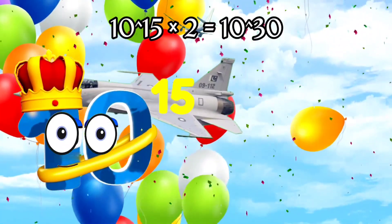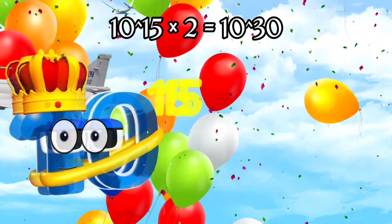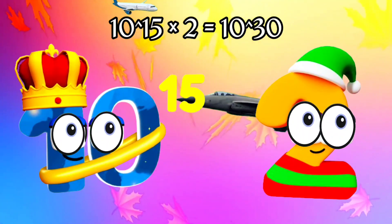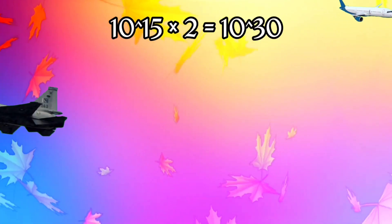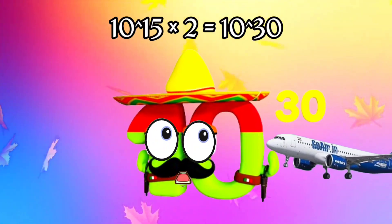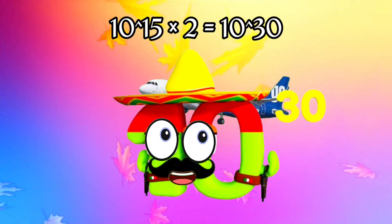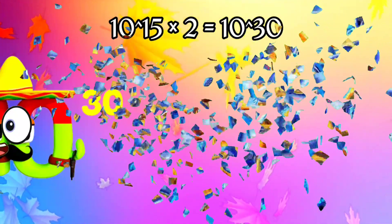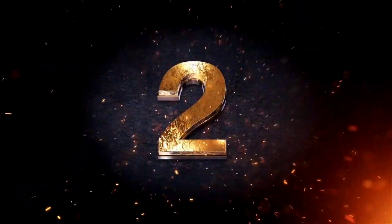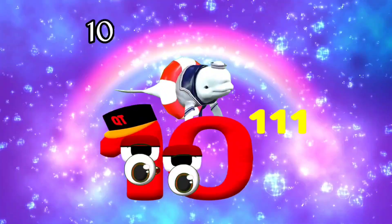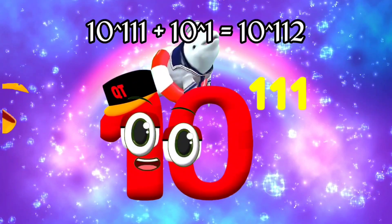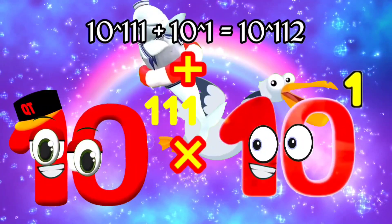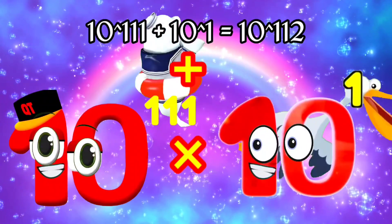I'm Quadrillion and I've got 15 zeros! Quadrillion 2, times. Equals I'm Nonillion and I'm made up of 30 strong zeros!